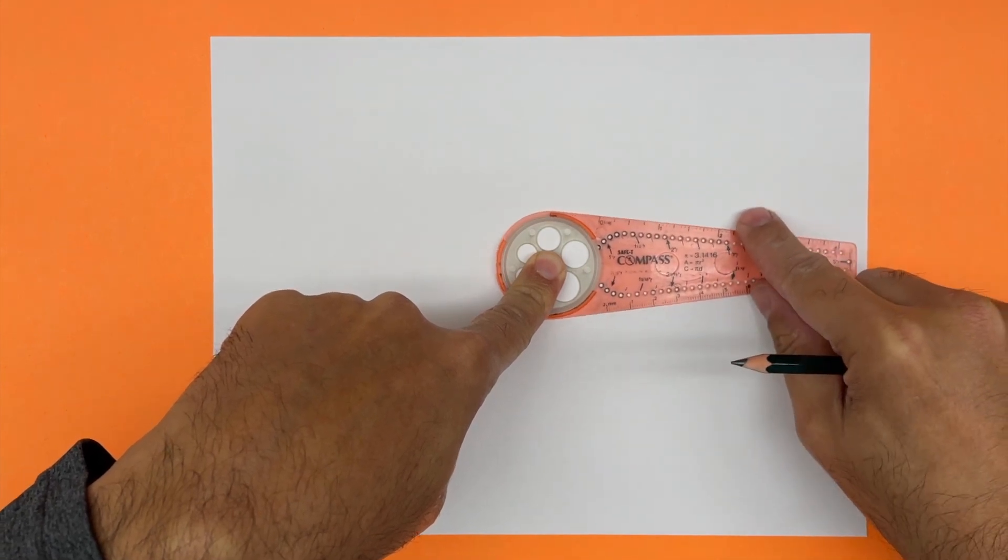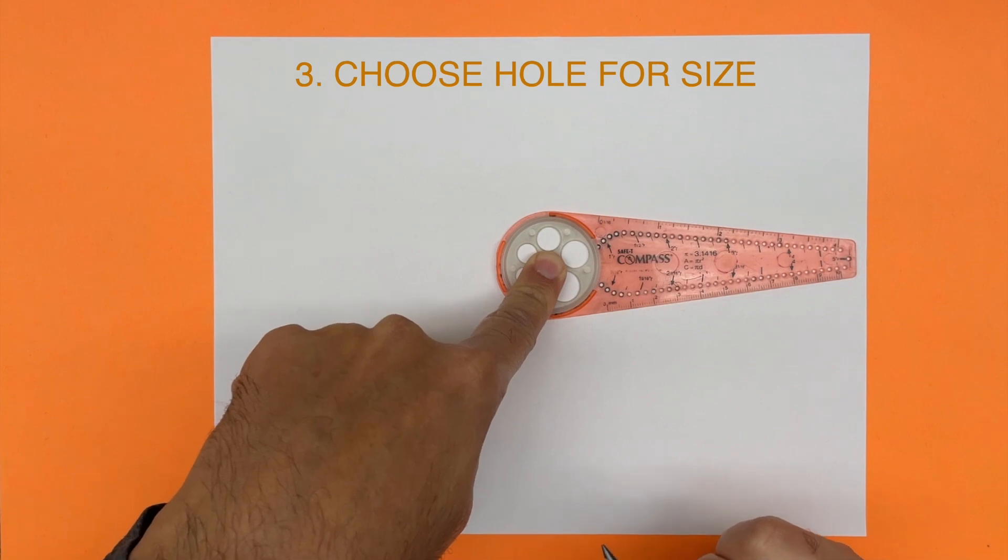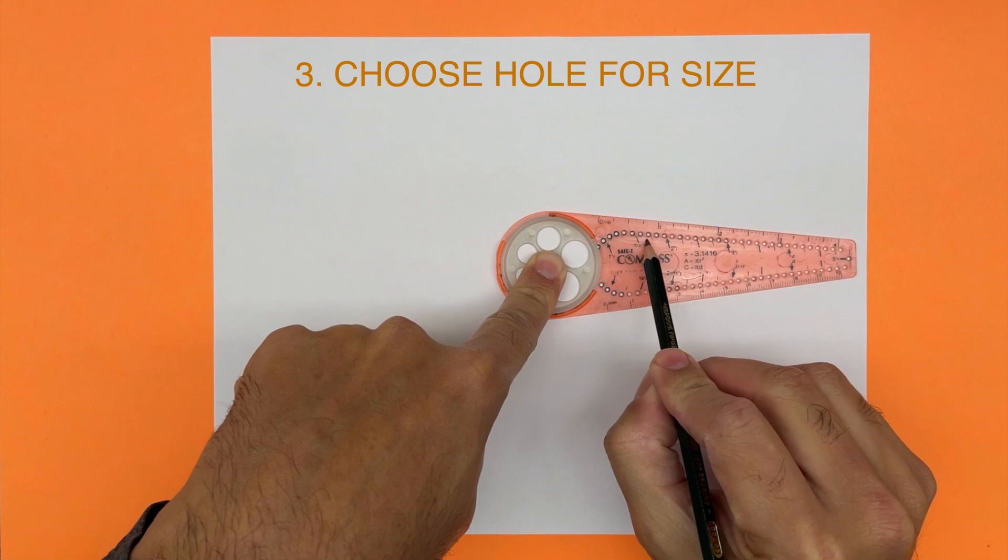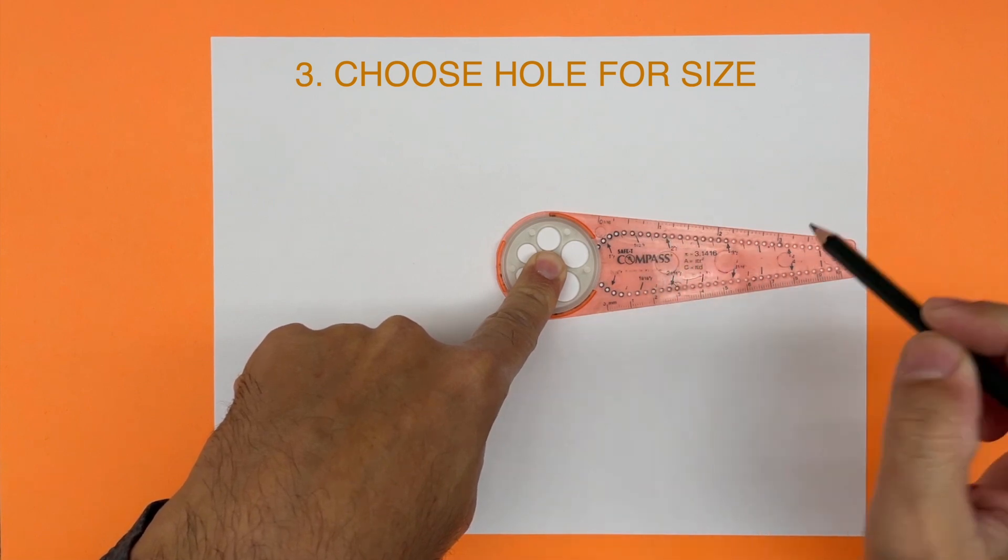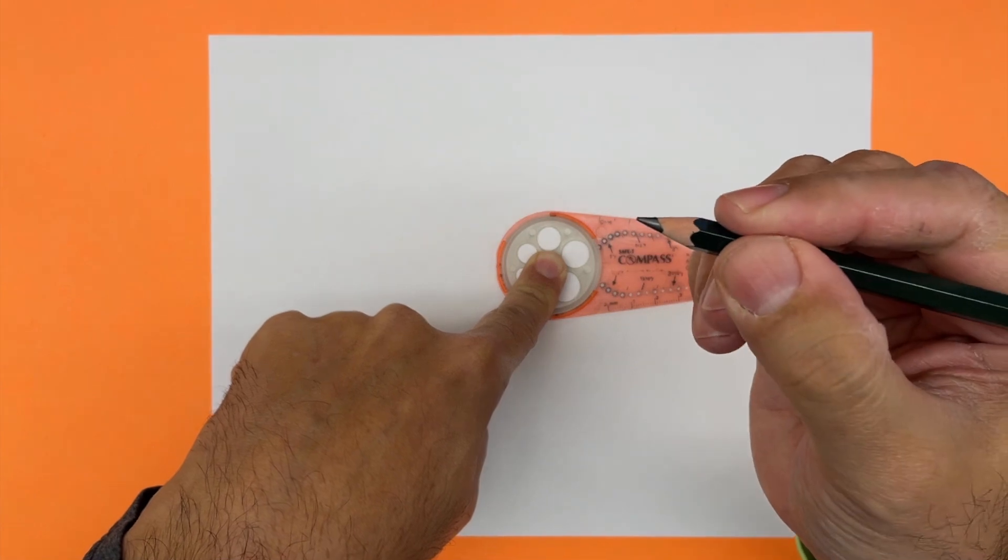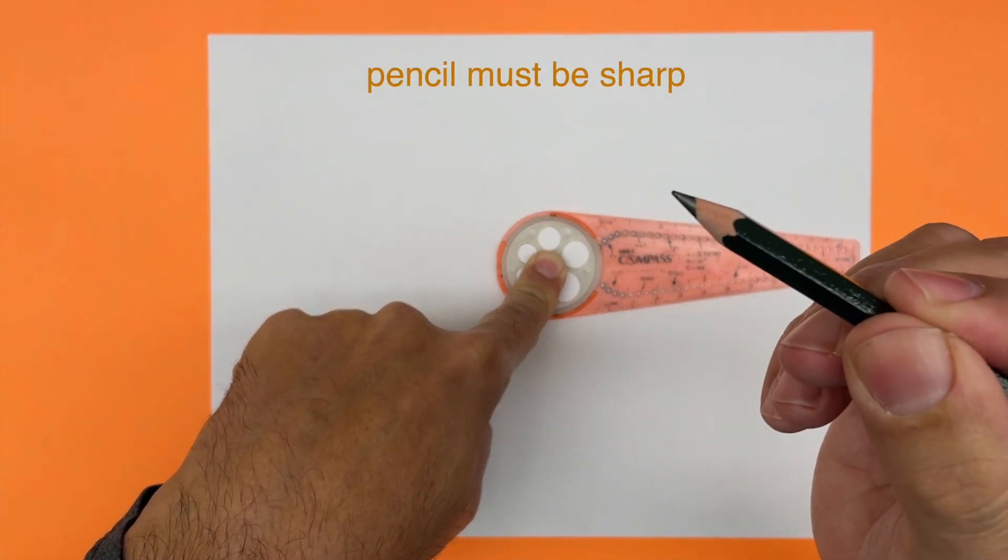Number three: once you hold the middle of the safety compass, you want to pick one of these sizes and fit your pencil through it. But if your pencil is not sharp enough, it won't fit through the holes, so your pencil needs to be nice and sharp.